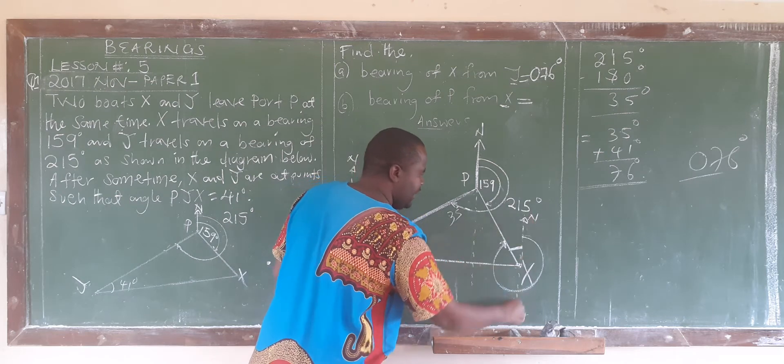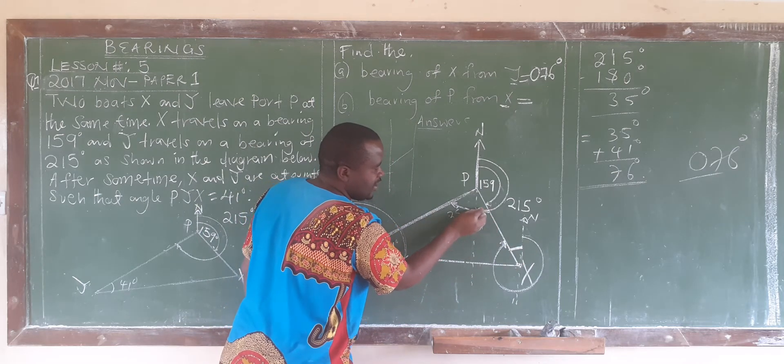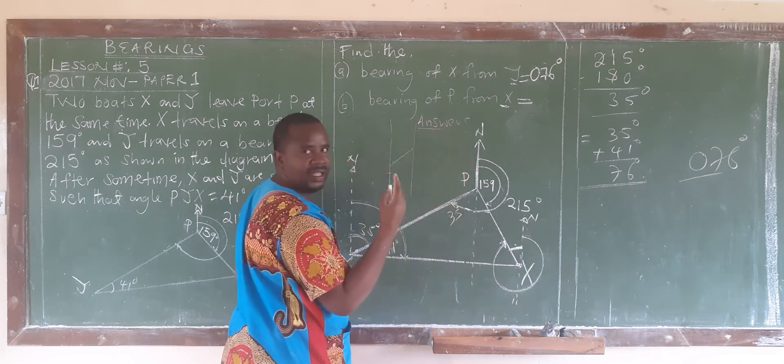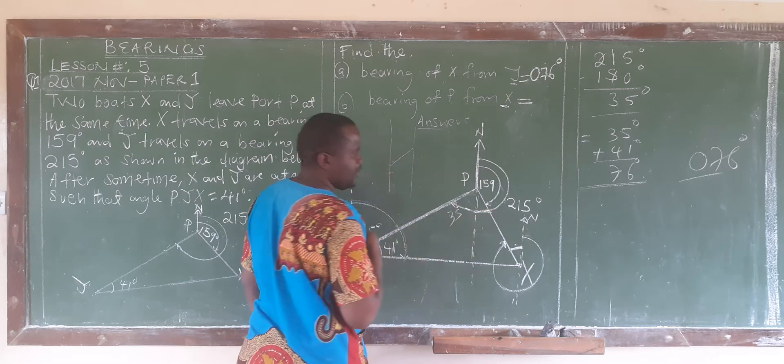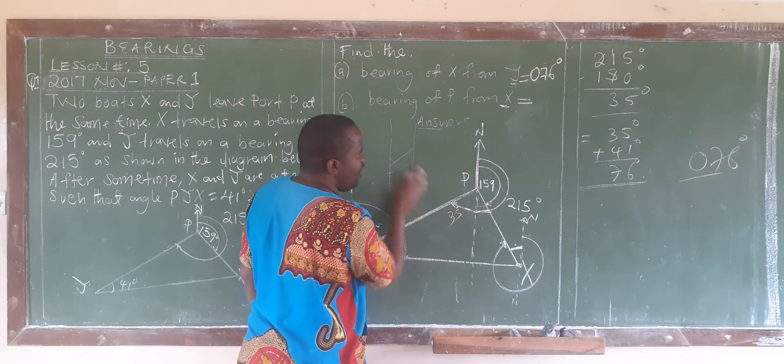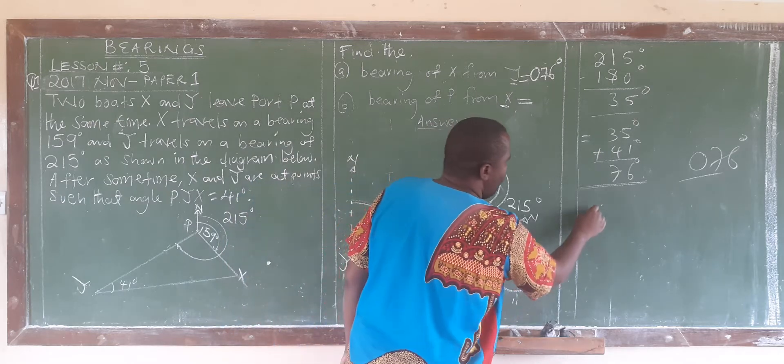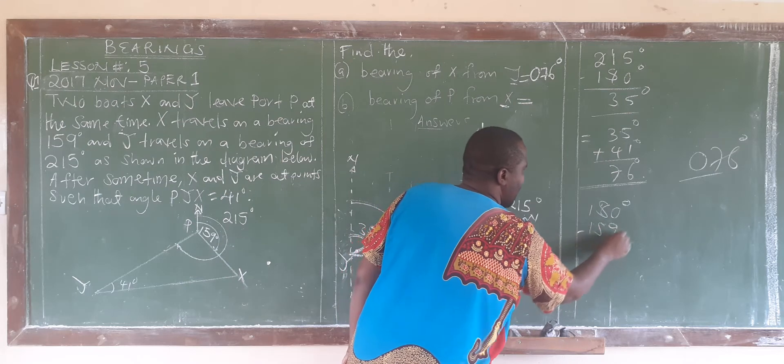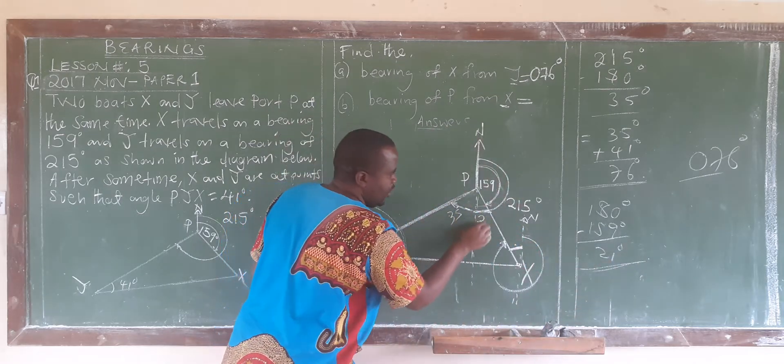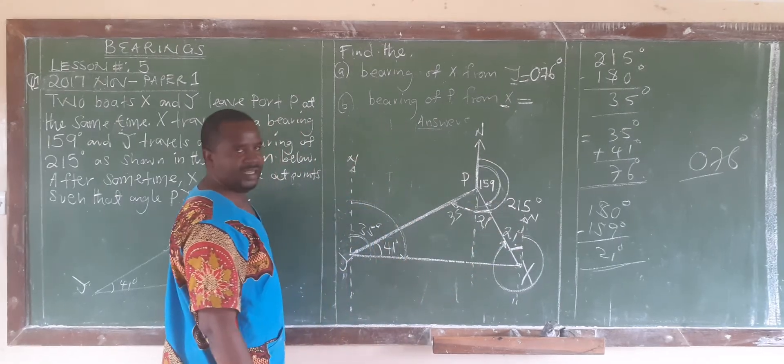We can try to apply the same property of alternate angles. Meaning that this angle would be alternate to this. Remember I said this is a straight angle up to here, which is 180. How can we find the difference? We are saying 180 degrees minus 159 degrees. When you subtract there, you get 21 degrees. So it means that this is 21 degrees, and if this is 21 degrees, this one will also be 21 degrees.